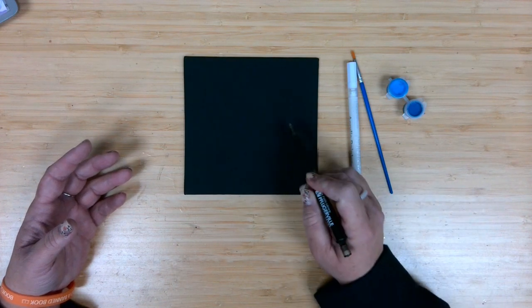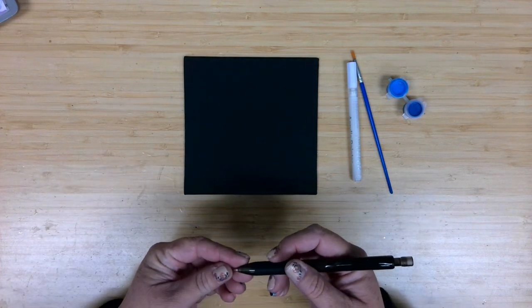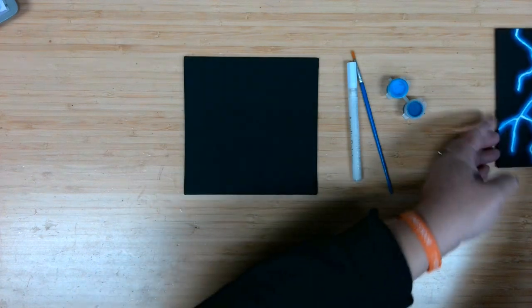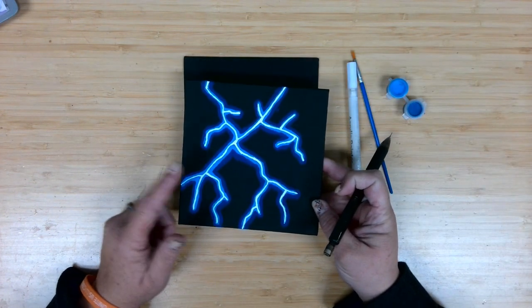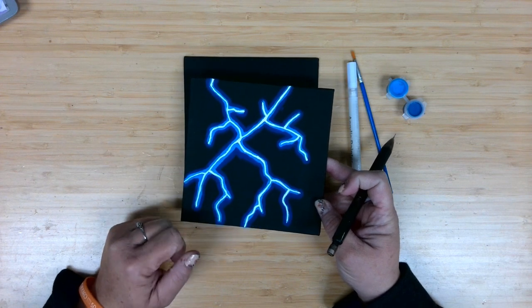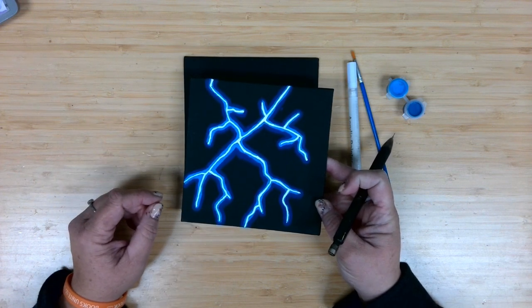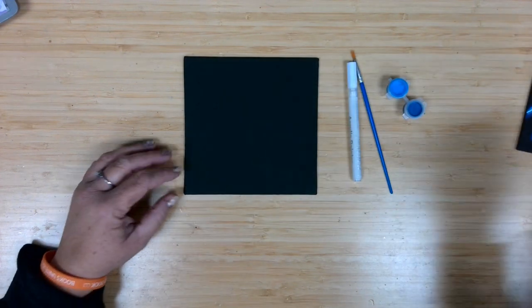And really this neon effect is the layers of color coming from the bright white on the inside into the neon color, and out to that darker matte color that blends into the black background. It really gives you that neon look.